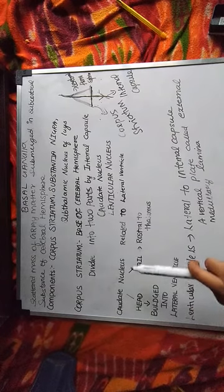So let's look at the Caudate Nucleus — I'll show you on the diagram first. See, here is the Caudate Nucleus. This Caudate Nucleus is related to the lateral ventricle. We have the head portion and the tail portion — the head of the Caudate Nucleus and the tail of the Caudate Nucleus. The head has a bulge into the lateral ventricle.